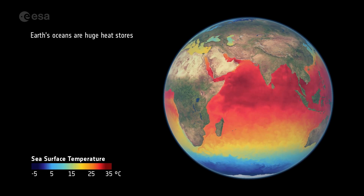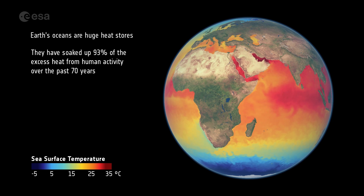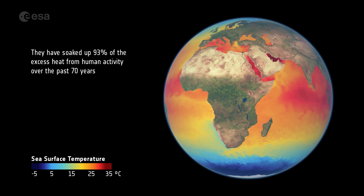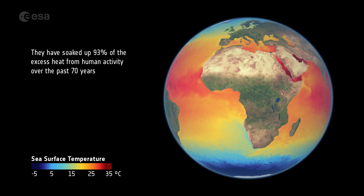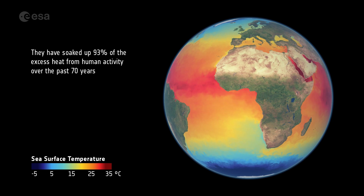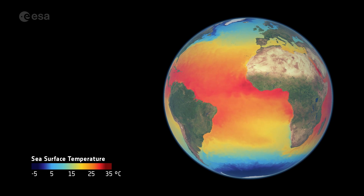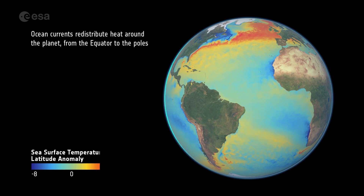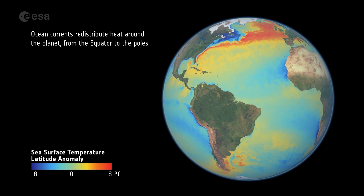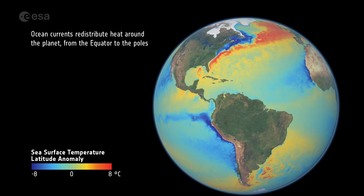Earth's oceans are huge heat stores. They have soaked up 93% of the excess heat from human activity over the past 70 years. Ocean currents redistribute heat around the planet, from the equator to the poles.